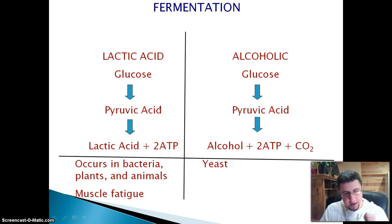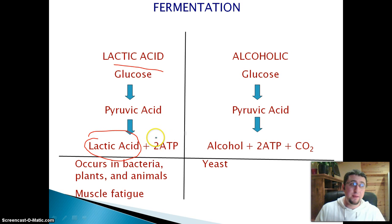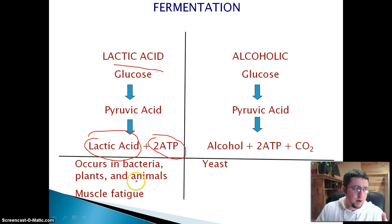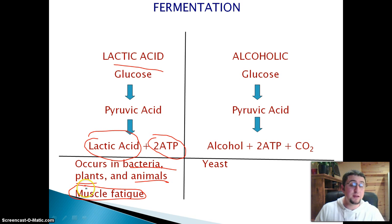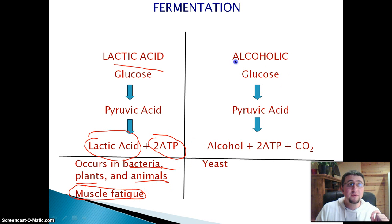Let me review the two types of fermentation. Lactic acid fermentation occurs in me and you. We take glucose, break it down into pyruvic acid, and we get a little bit of lactic acid, which makes our muscles really sore, plus two ATP molecules — a little bit of energy. This occurs in animals, plants, and bacteria, and contributes to muscle fatigue. When you're really stressing yourself at a big game, you are building up lactic acid due to fermentation.